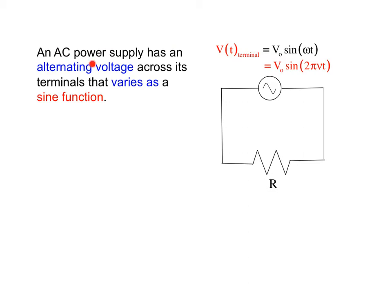So what's going on in an AC setting? Well, in an AC circuit, and I might add this is the symbol that's used for an AC power supply, the terminals of the power supply actually have an alternating voltage across them that varies as a sine function. So there we have it characterized as a sine function.